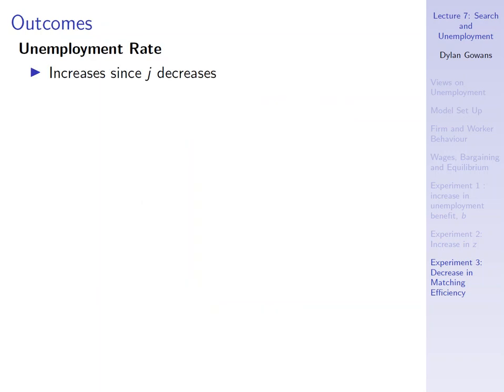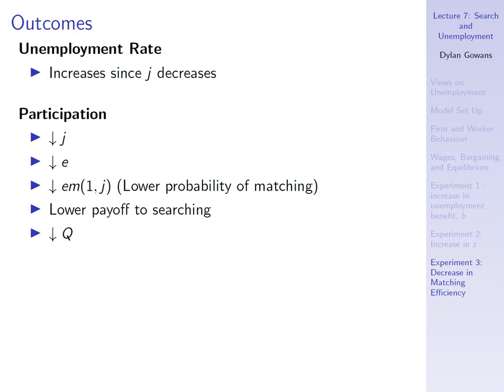So what about our variables of interest? The unemployment rate increases, again, because the unemployment rate is wholly determined by J. And J has gone down, which means that there will now be fewer matches per searching worker, and therefore more people remain unemployed, more people will remain searching. Participation rate, J goes down, E goes down, and so therefore, lower probability of matching, lower payoff to searching, and Q goes down.